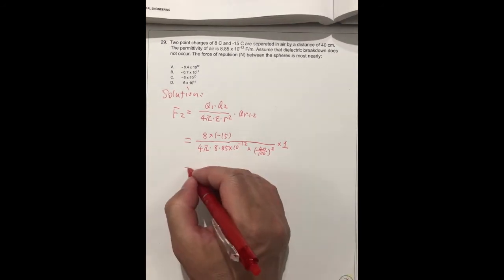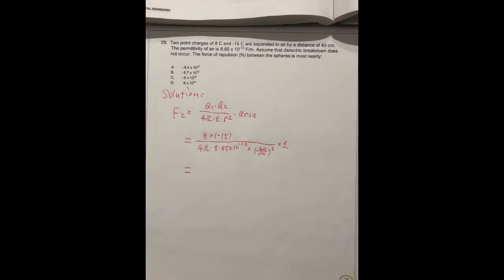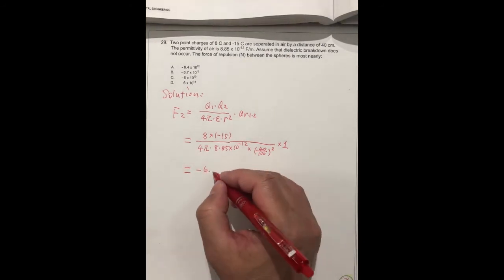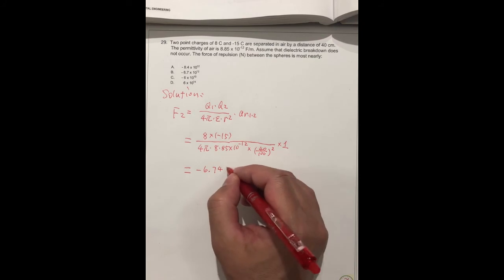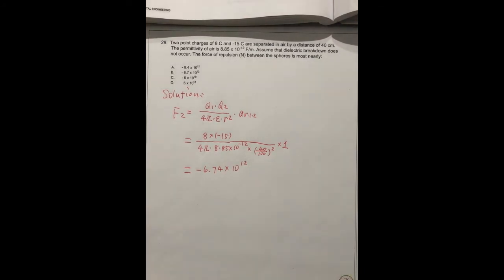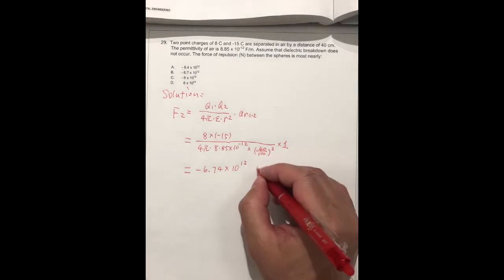We can get the correct answer is minus 60.74 times 10 to the 12 power. This is in newtons.